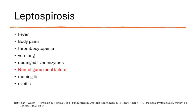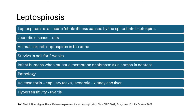Most leptospirosis patients come to you as a viral fever — fever, body ache, thrombocytopenia, vomiting, and deranged liver enzymes. The most important thing is they have non-oliguric renal failure, so don't forget to check creatinine in monsoon fever patients. Some may also have meningitis and uveitis. This presentation was originally also called Weil's disease.